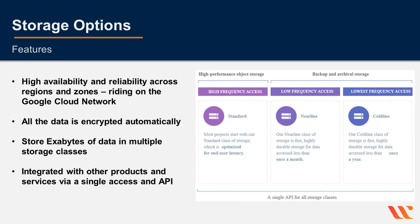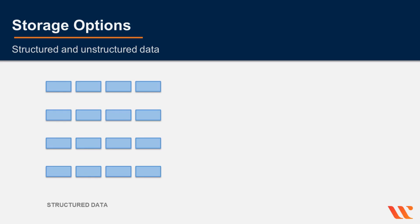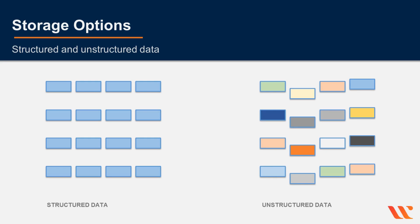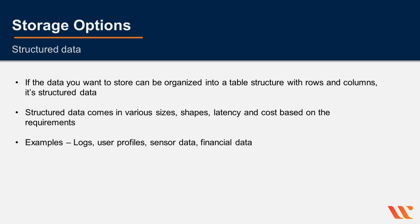Having storage products on the same platform as virtual machines, applications, and virtual networks means seamless integration and the ability to use a single API to access different products. These eight storage products can be divided into two main categories for storing structured data and unstructured data.